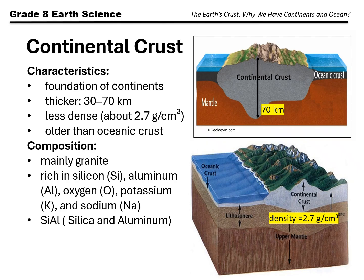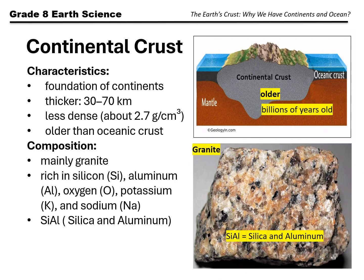Continental crust is older than oceanic crust. Some parts of the continental crust are billions of years old. This makes the continental crust like an ancient record of Earth's history, containing old rocks and fossils. It's mostly made of granite, which forms deep underground where magma cools slowly and contains lots of silica and alumina. That is why it's sometimes called SIAL, short for silica and aluminum.